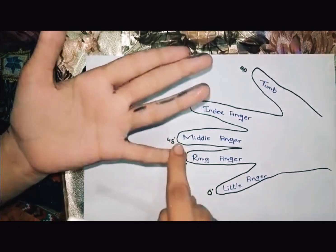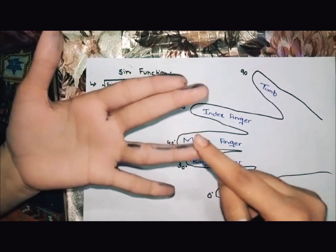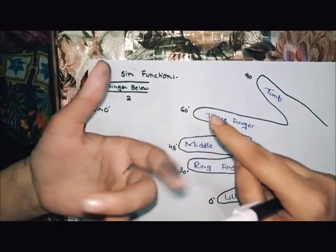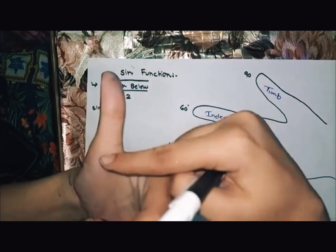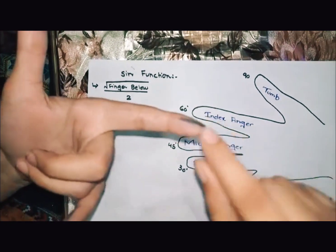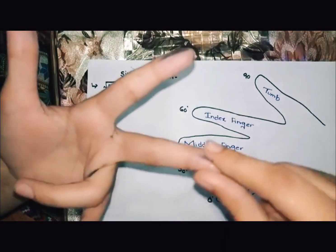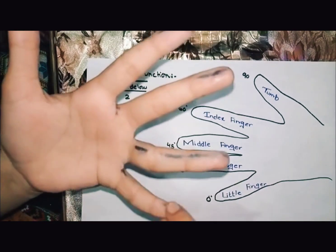If we use left hand, this one has little finger, ring finger, middle finger, index finger, and thumb. Thumb has 90 degree, this one has 60 degree, 45, 30, and zero degree.